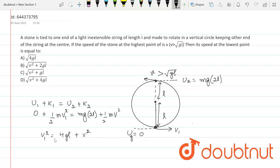So this can be written as, therefore, V1 can be written as root of V square plus 4GL. So this is the answer for the question. So that means D part will be correct.